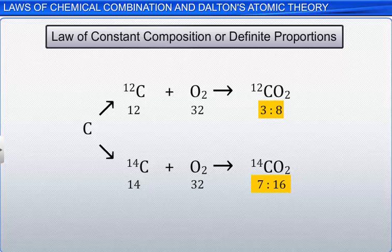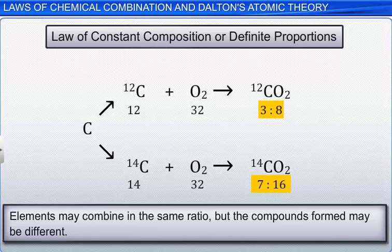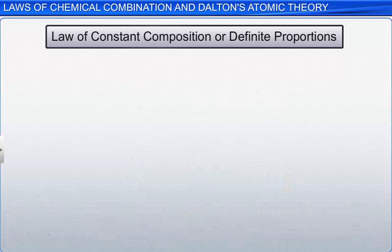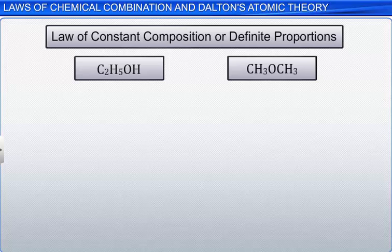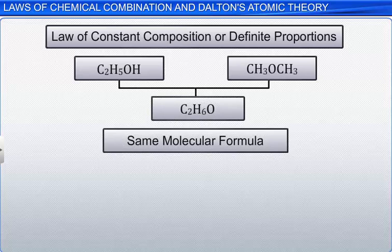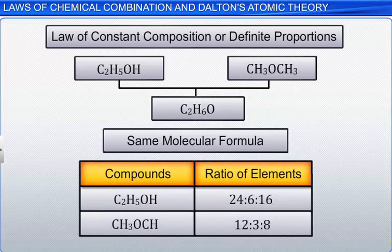Another limitation of the law is that elements may combine in the same ratio, but the compounds formed may be different. For example, the compounds ethanol and dimethyl ether have the same number of carbon, hydrogen, and oxygen atoms, but their arrangement is different. That is, the compounds are different.